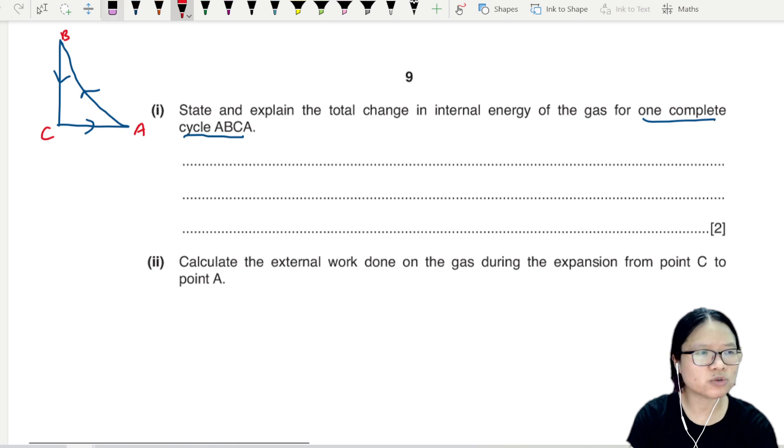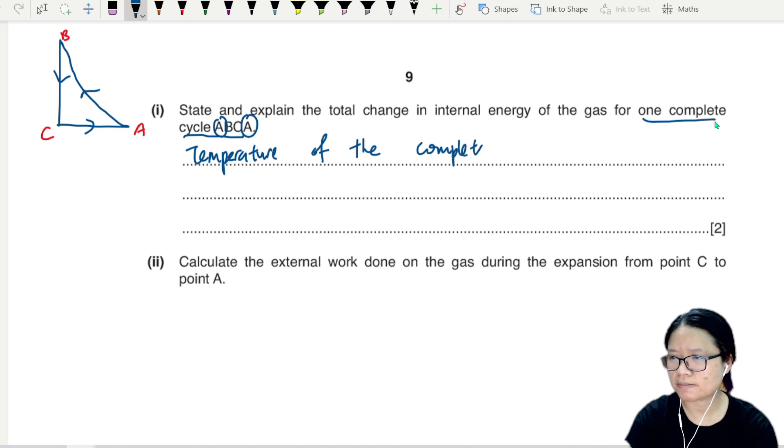This was A, this is B, this is C. If you return to the initial state, your temperature is the same. So this is a cycle and we go from A and back to A, so the temperature of the complete cycle remains the same, no change in temperature.